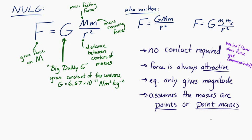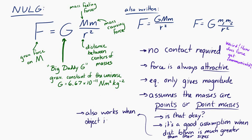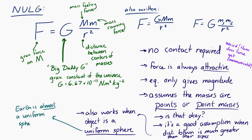Of course, objects aren't really points — everything has some length, width, and height. But the point-mass assumption is very good as long as the distance between the objects is much greater than their individual sizes. It also holds if the object is a uniform sphere. The Earth is approximately a uniform sphere, so it works pretty well. When we have a uniform sphere, r in this equation is the distance between the centers of the two objects.